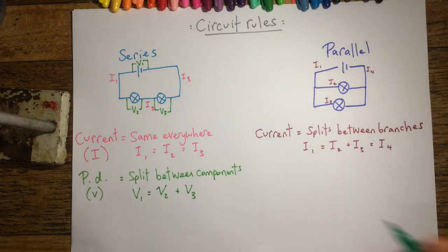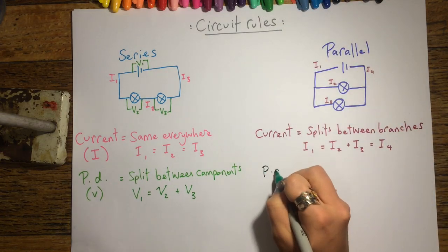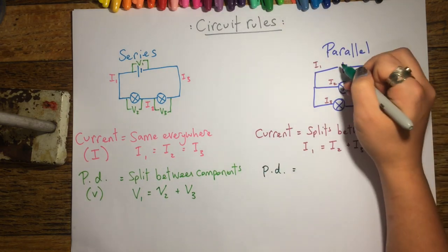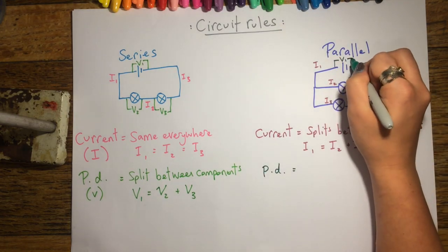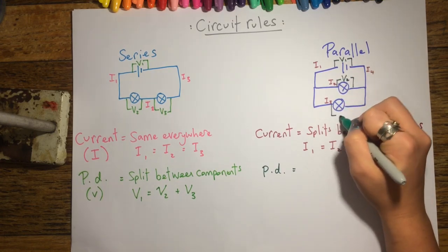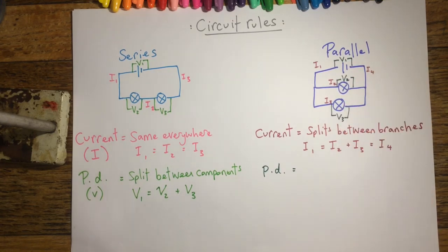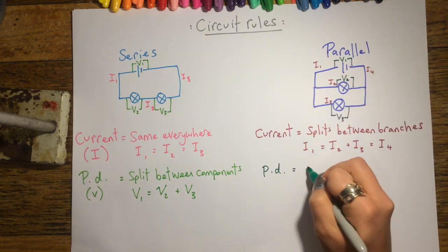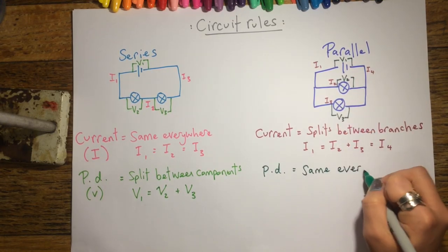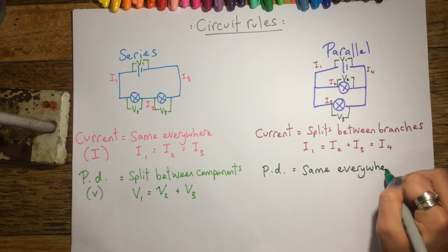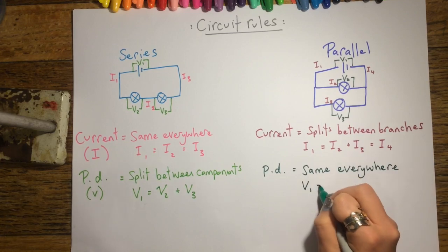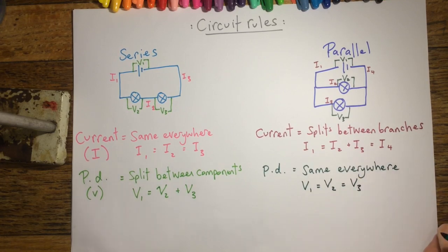In a parallel circuit, remember there are multiple paths that the charges could take after the junction. Therefore, each component is going to get the charge's full amount of potential difference. So the potential difference will be the same everywhere, and it will be the same as the battery voltage.